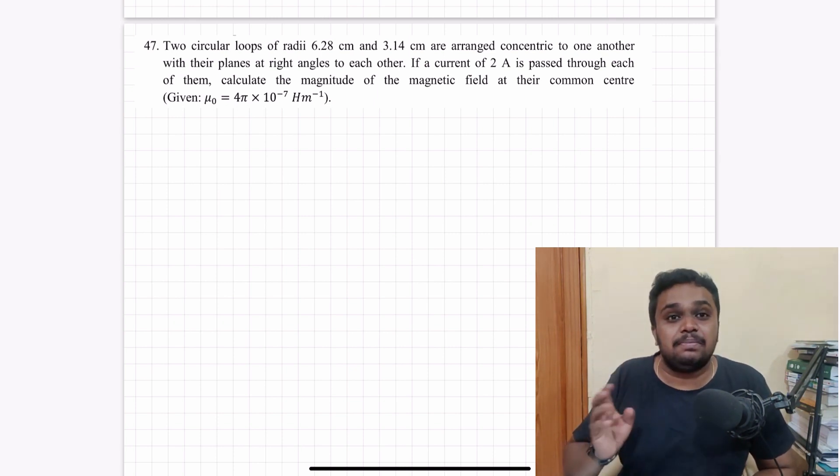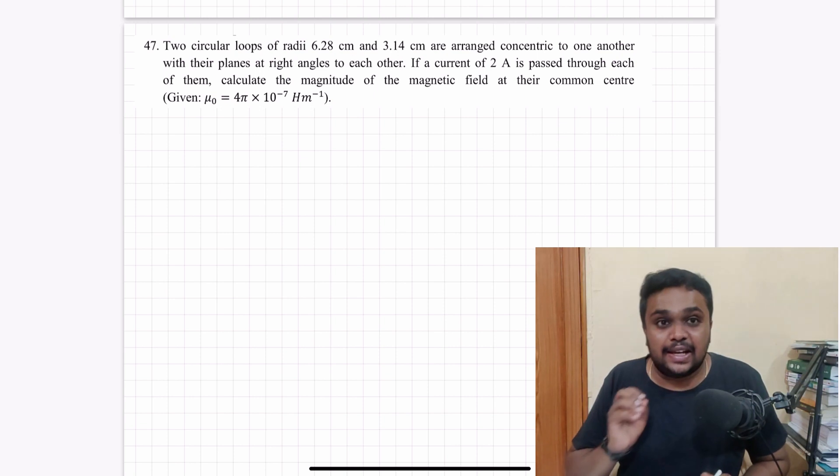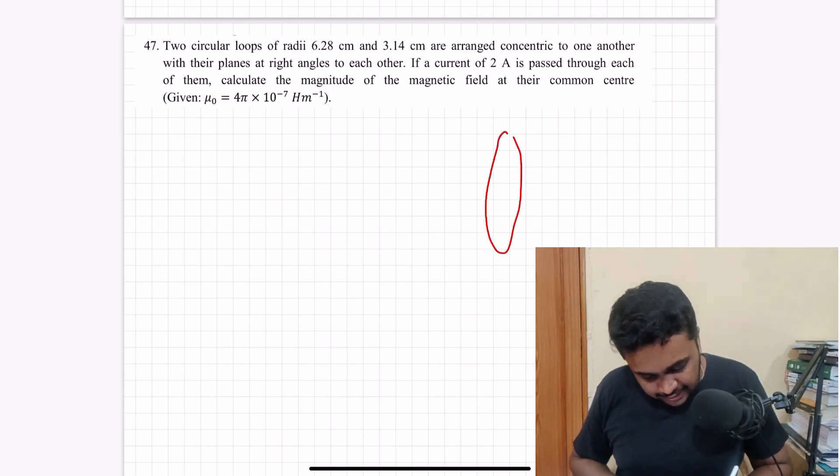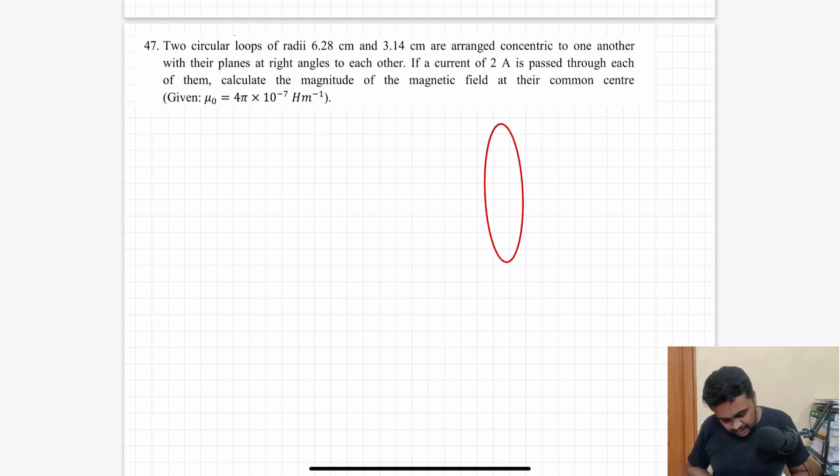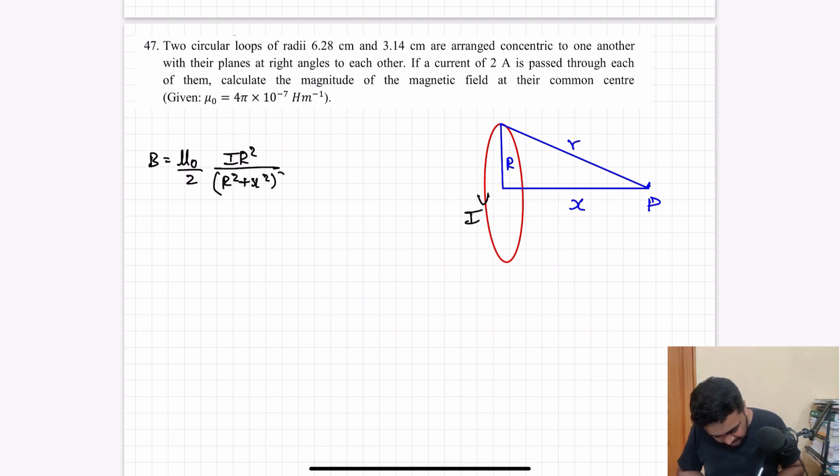Problem 47 is from moving charges and magnetism. We will solve using the basic theory. We have a circular current carrying loop. The current is I. I will consider a point P which is at a distance of x, and this circular loop has a radius of capital R.